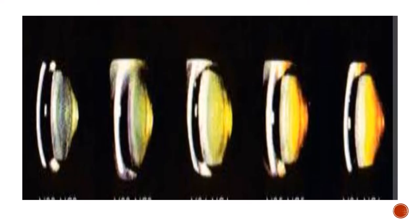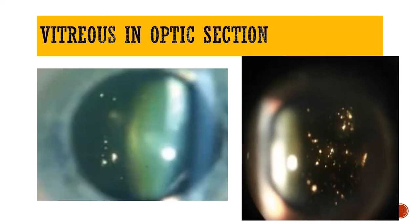In the optical section you can also see the color of the nucleus and grade the nuclear sclerosis as grade 1, 2, 3, 4, or 5 based on the Locs classification. You can compare the colors — whether it is grayish, somewhat greenish, or amber — and it becomes more yellowish and brownish towards the harder grades of cataract.